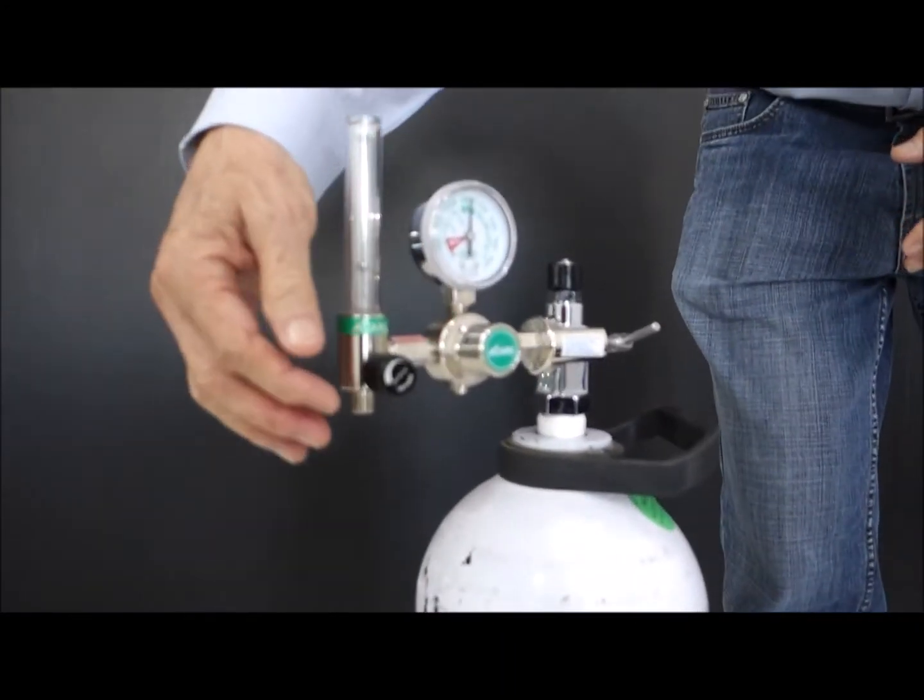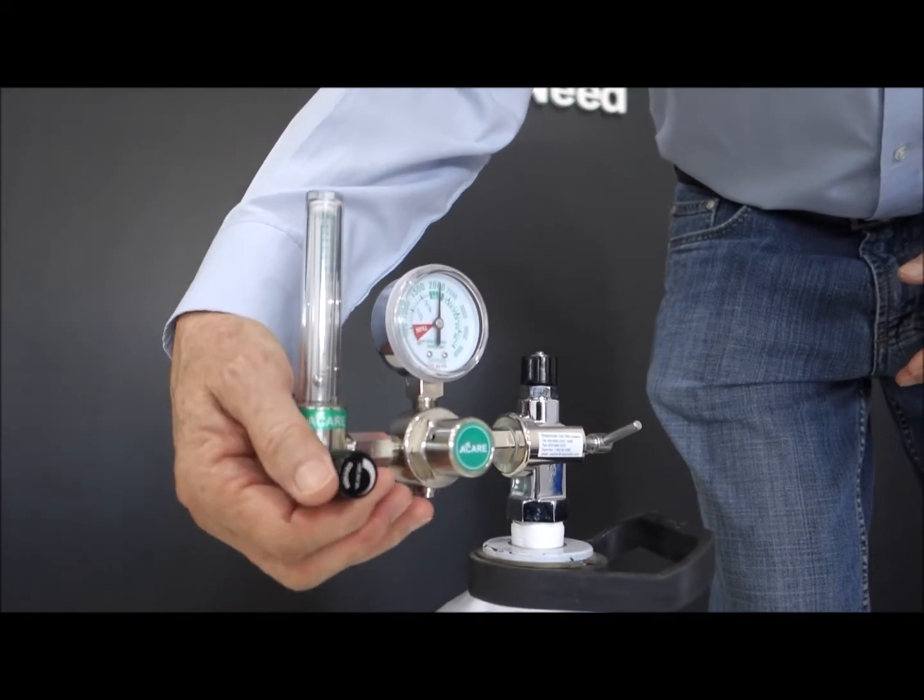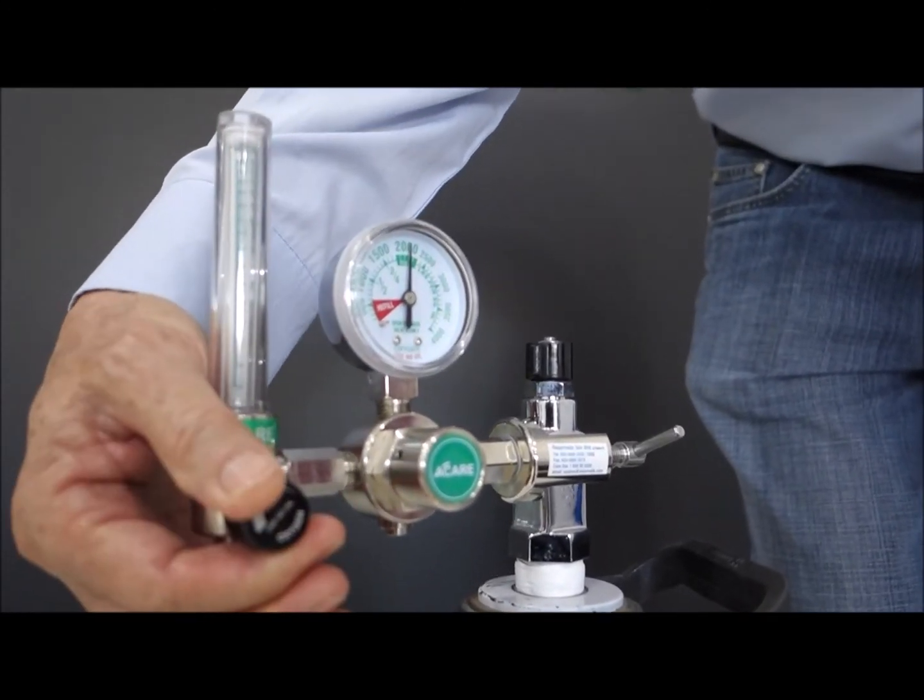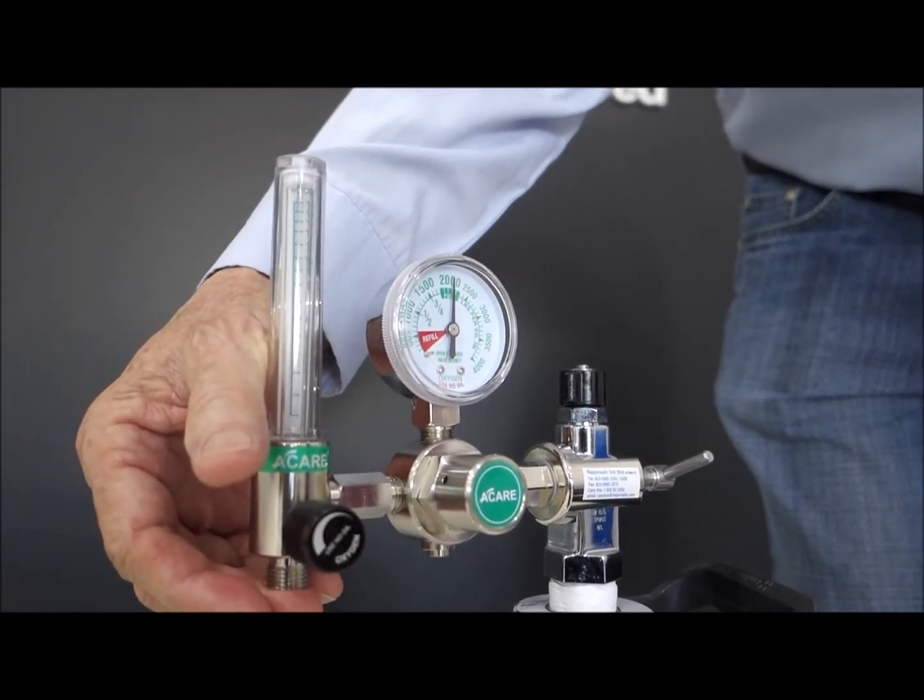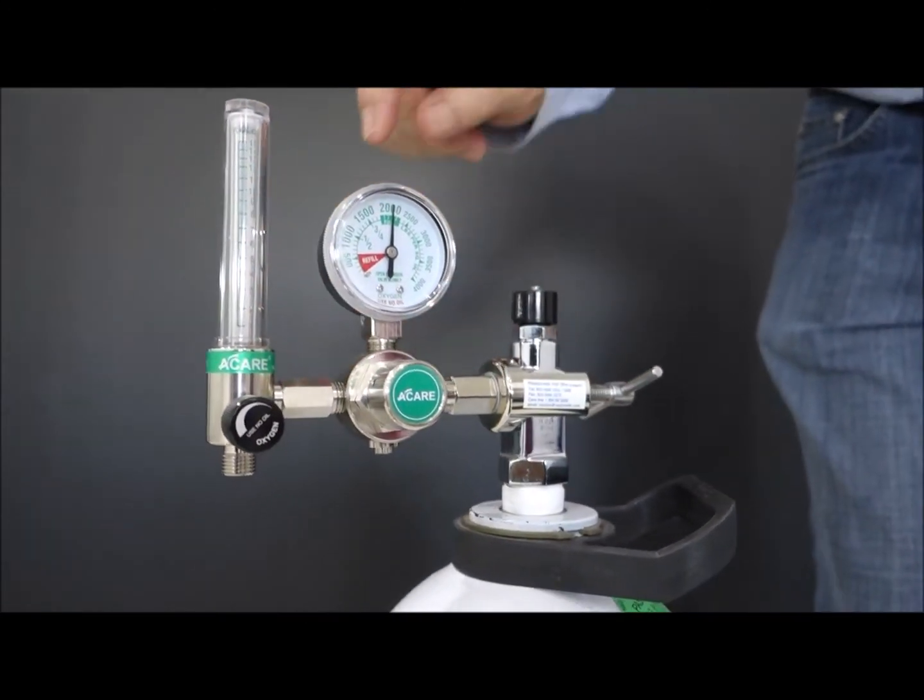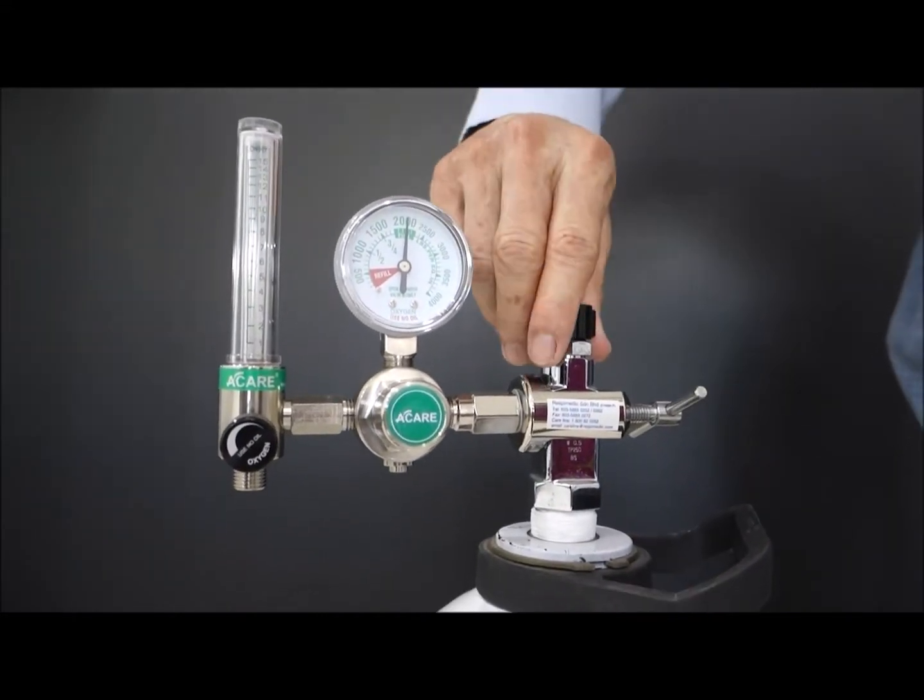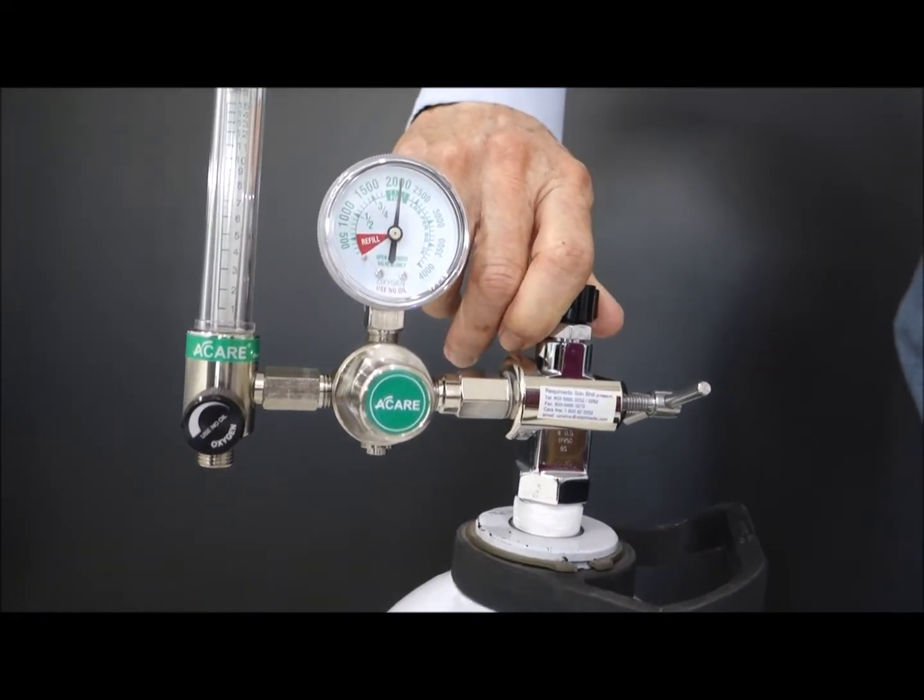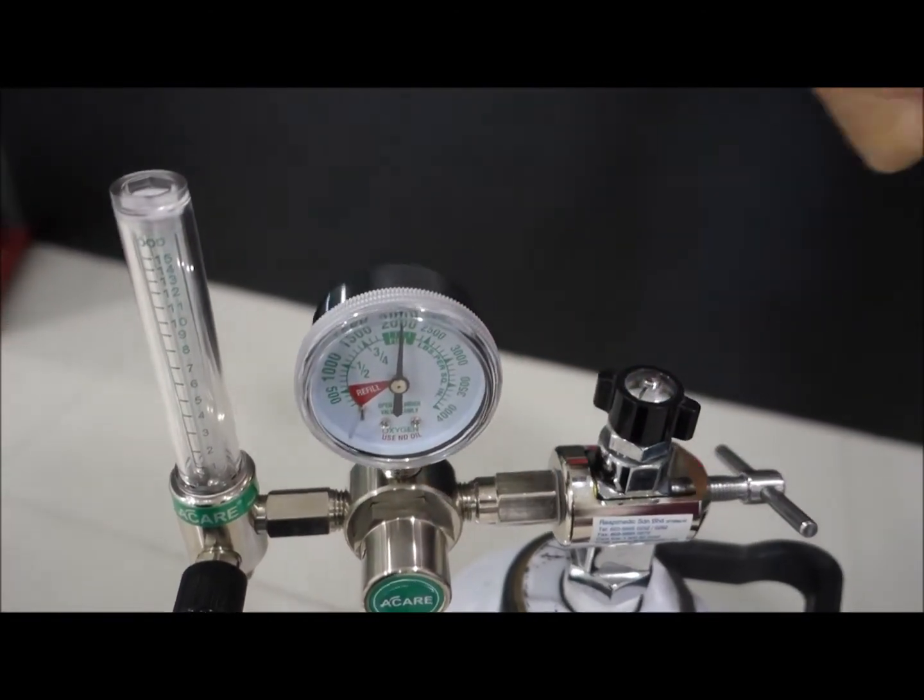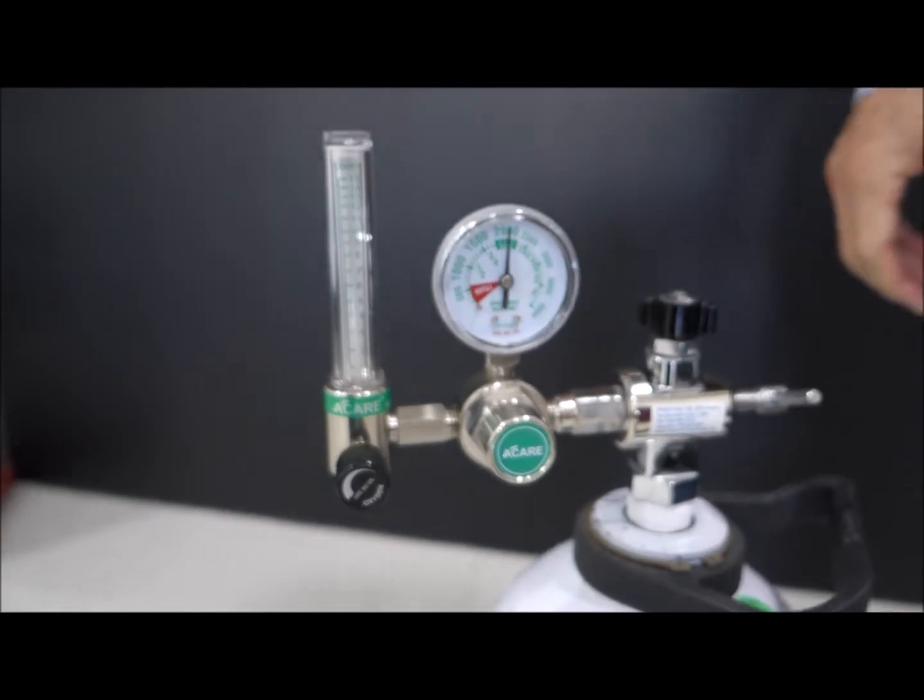And then of course, after you use it, then make sure, remember to turn off the flow, turn off the flow control, after you finish using it, to conserve the oxygen in the cylinder. But not only that, you'll see the pressure is still there. So remember, for safety, it's always best to turn off the cylinder valve also. Turn clockwise to turn off the cylinder valve.